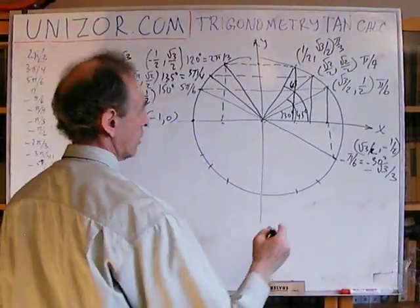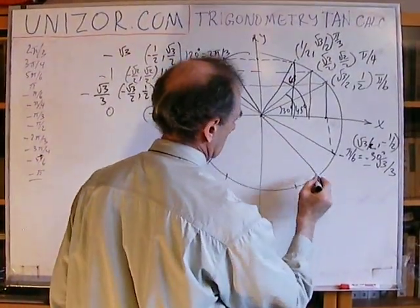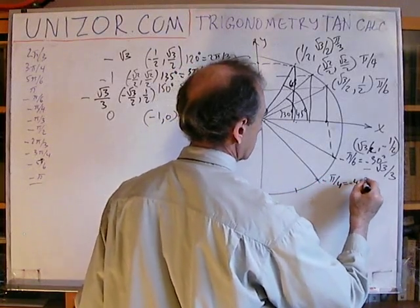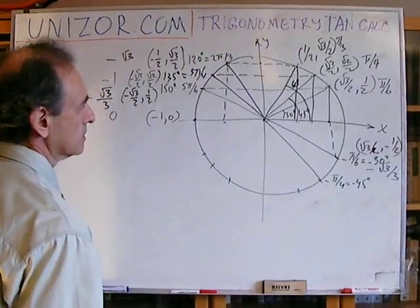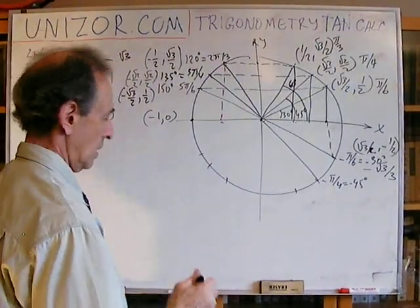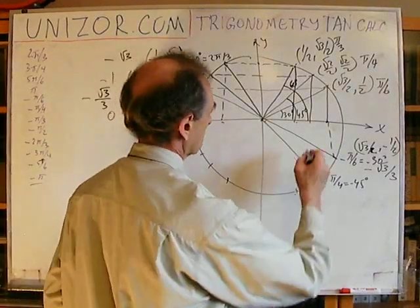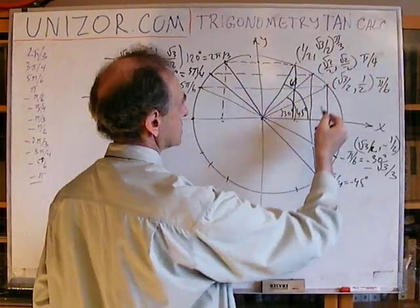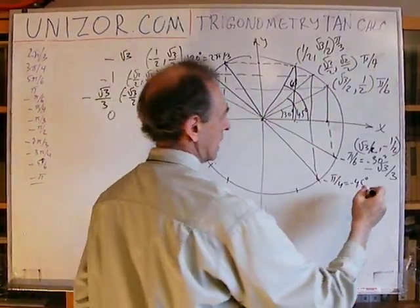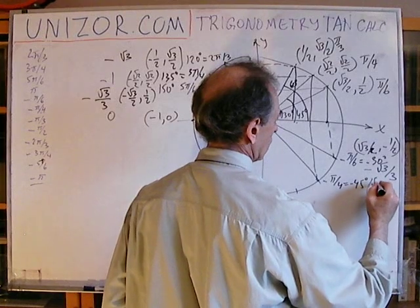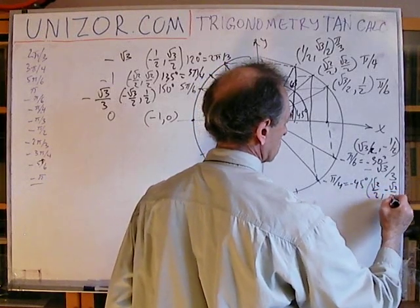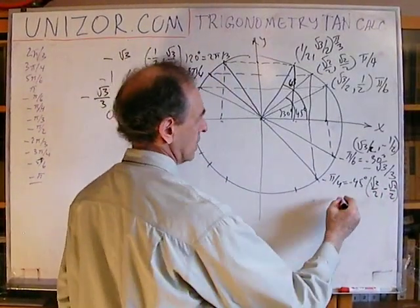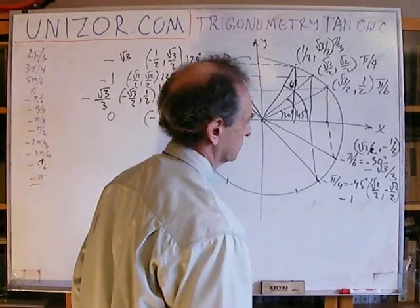Next is −π/4, which is −45 degrees. By symmetry with +45°, the abscissa is the same but the ordinate changes sign: (√2/2, −√2/2). The ratio of ordinate over abscissa is −1. That's the tangent.